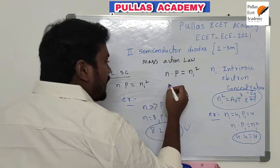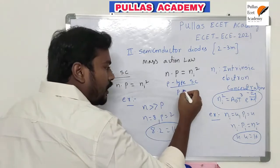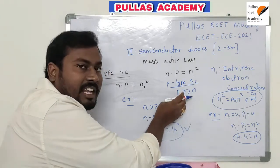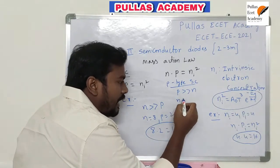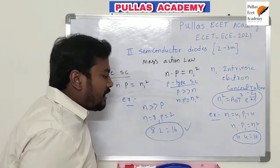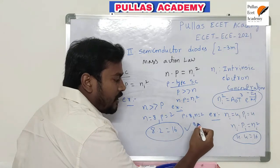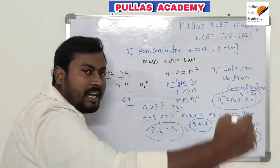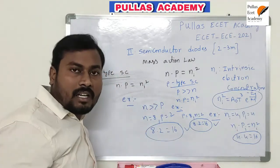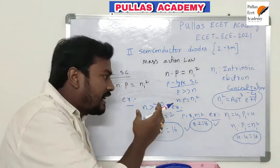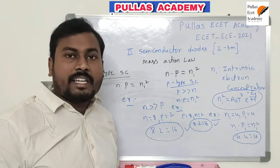Considering P-type semiconductor, in P-type semiconductor P is the majority carrier concentration and N is the minority carrier concentration. N times P equals Ni squared. For example, taking P equal to 8 and N equal to 2, multiplying these gives Ni squared. This means mass action law is valid in any semiconductor — intrinsic, extrinsic N-type, or extrinsic P-type. This mass action law is well valid.